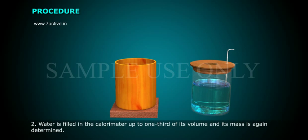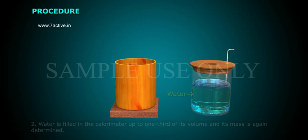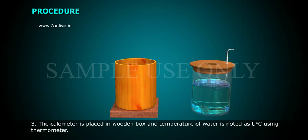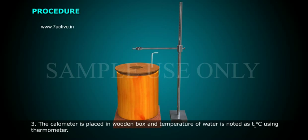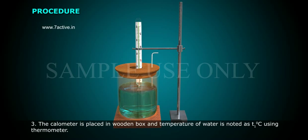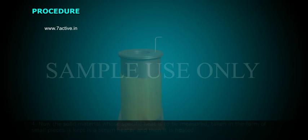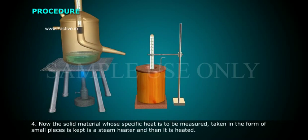Water is filled in the calorimeter up to one third of its volume and its mass is again determined. The calorimeter is placed in a wooden box and the temperature of water is noted as T1 degree centigrade using a thermometer.